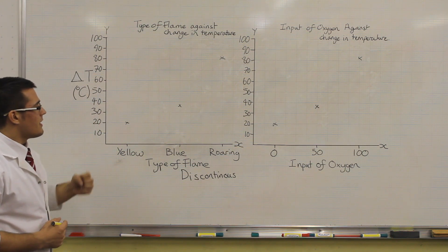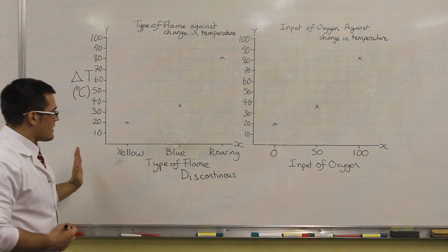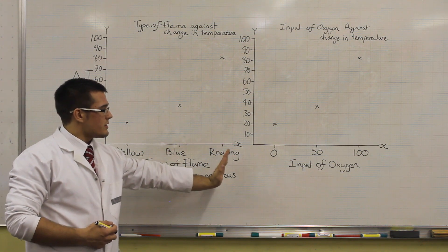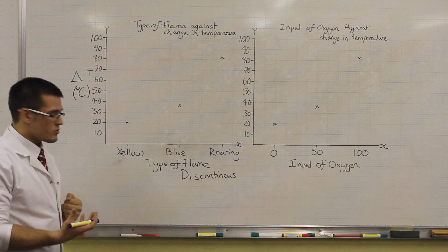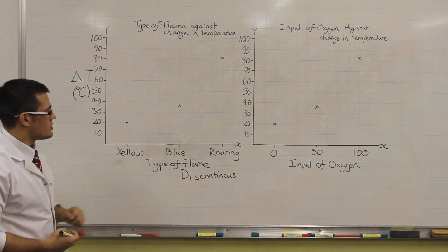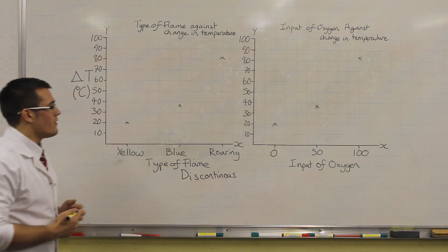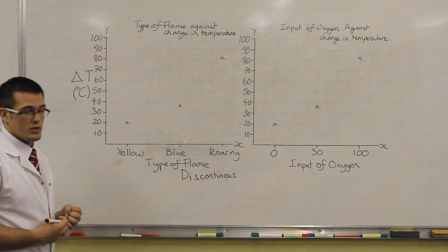We cannot say, in terms of our trend and pattern, that there is a change between these things. All we can say is we can do a good description. So we can say that the yellow flame has the least change in temperature, the blue flame the middle, the roaring flame the most. We can only describe it in very qualitative terms.